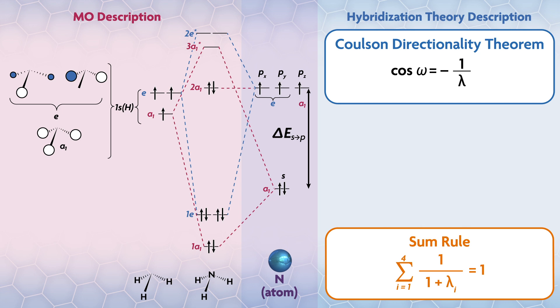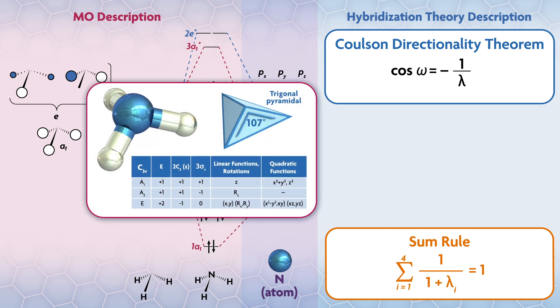Just like for MO theory, the starting point for any hybridization analysis is the geometry of the molecule. And recall that the compound is pyramidal with H-N-H angles of 107 degrees in C3v symmetry. Each of the N-H bonds is equivalent. As a result, the nitrogen should use three equivalent hybrids to bond to the hydrogens.